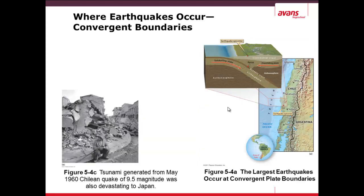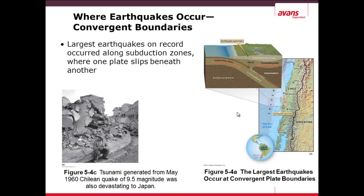Earthquakes also occur at convergent boundaries, where one tectonic plate is subducting or going underneath a continental plate. This is specifically where a 9.5-magnitude subduction-zone earthquake occurred in Chile in 1960, which also traveled across the Pacific Ocean to Japan, causing a massive tsunami. The largest earthquakes on record have occurred along these subduction zones at convergent boundaries, as one plate slips beneath another. Reverse thrust faults are also common here.